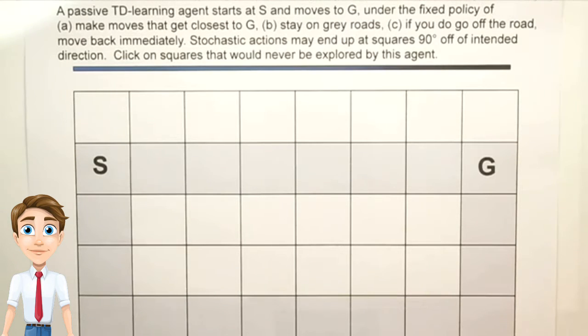And what I want you to do is click on all the squares that would never be explored by this reinforcement learning agent following this passive fixed policy.